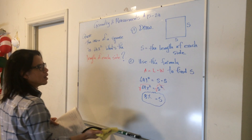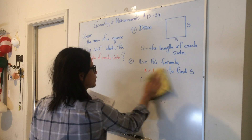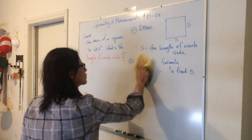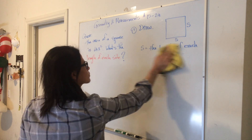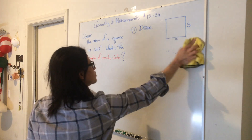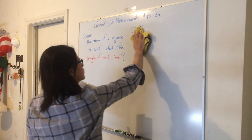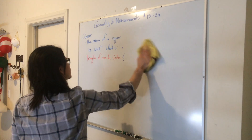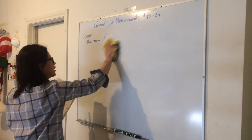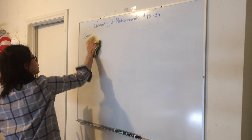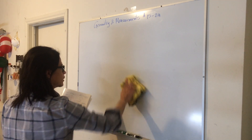Now moving on to circles. When you hear the word circle, you ought to automatically think of the words radius, diameter, circumference, and area. Let's talk about what those are.